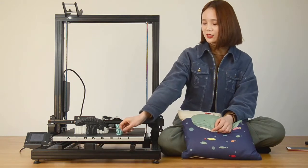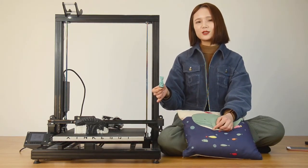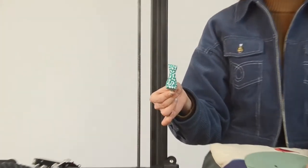The dual extruder of Orca 2 Cygnus allows you to use two filaments in a single print. You can use different colors of the same kind of filament or you can use totally different kinds of filament.